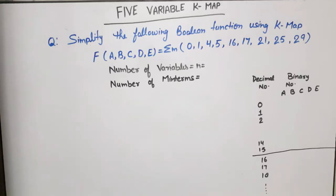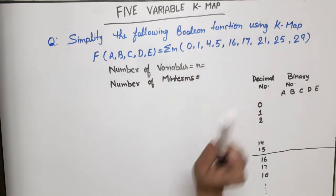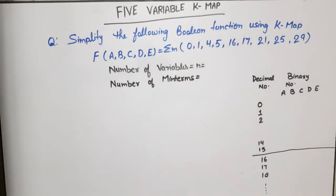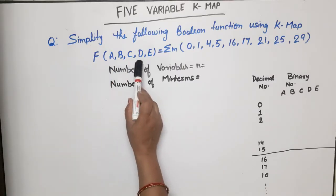Hello everyone. In this video lecture of digital electronics or digital system design, I am going to discuss one problem of a five variable K-map. According to the question, simplify the following boolean function using K-map. The question did not explicitly mention five variables, but when you look at the function, you can see variables A, B, C, D, E — so this is a five variable function.